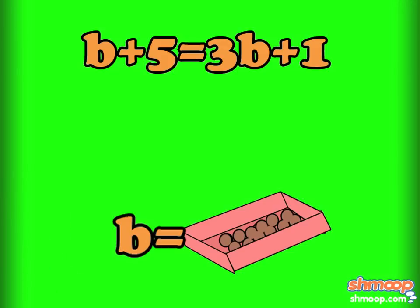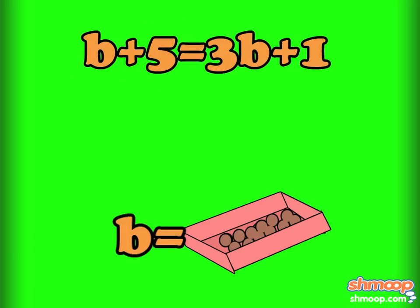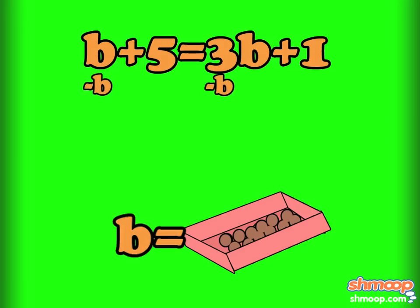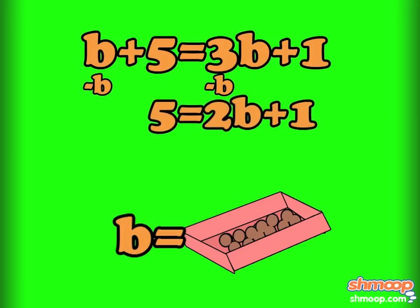We want to get all the boxes on one side of the equation to make this problem easier to solve. We can do whatever we want to one side of the equation, as long as we also do it to the other side. So let's subtract b from both sides. Now we have the equation: five equals two b plus one.